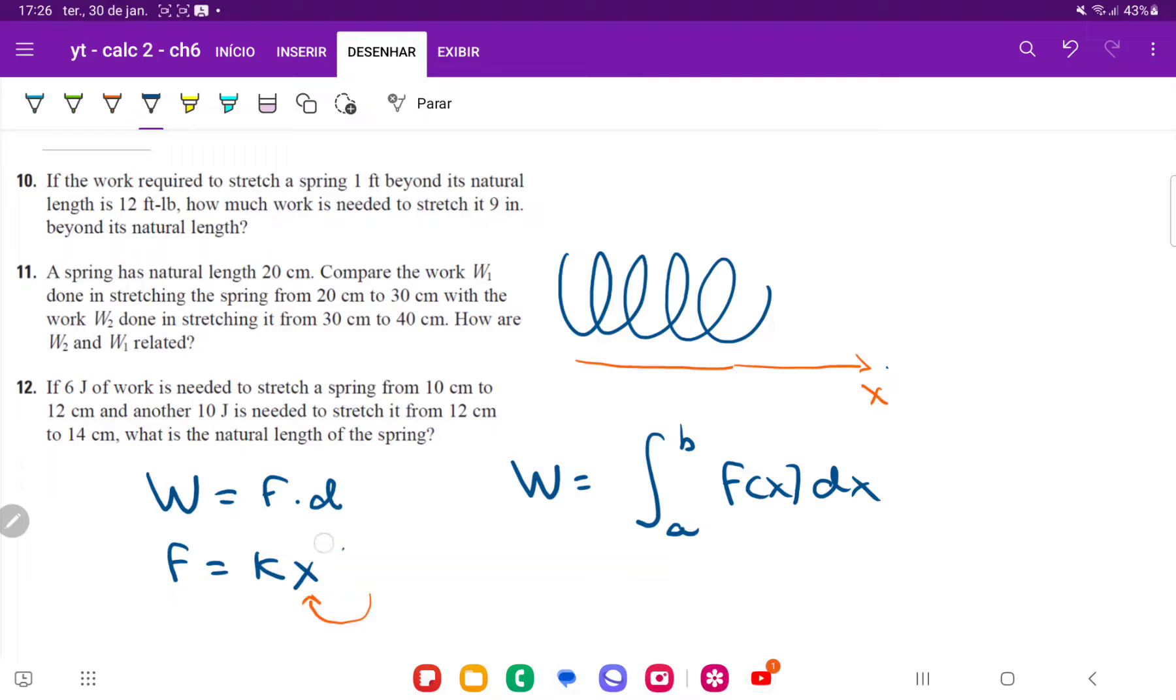And then f of x, as we saw here, is just k times x. So we can replace this. So work is going to be the integral from A to B of k times x, which is our force that changes from the input of x, times dx.